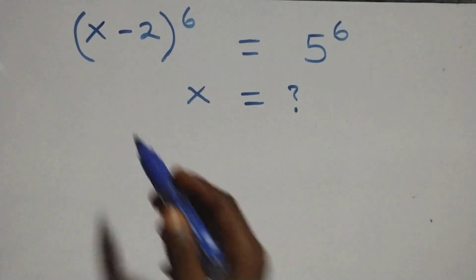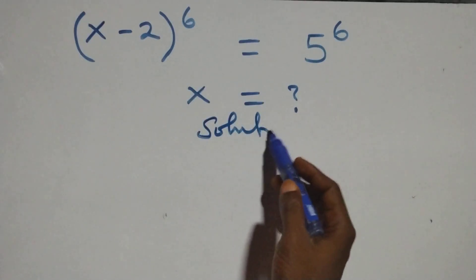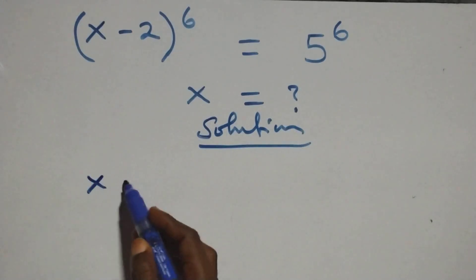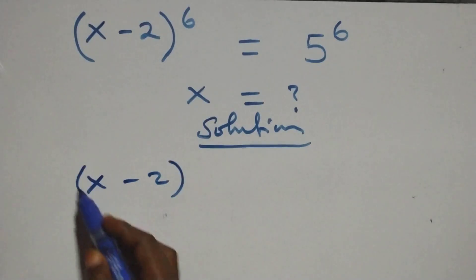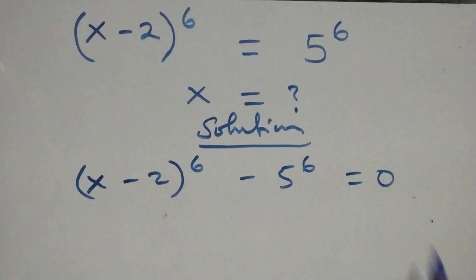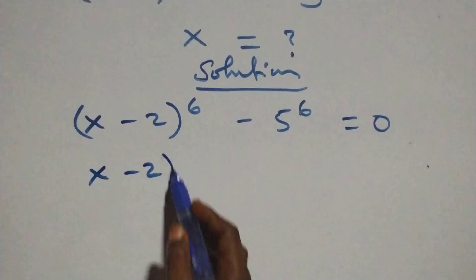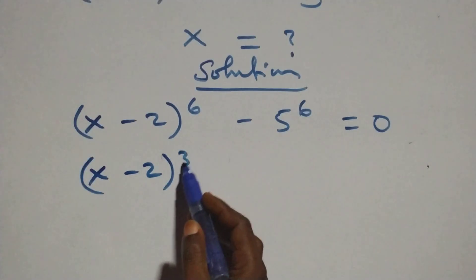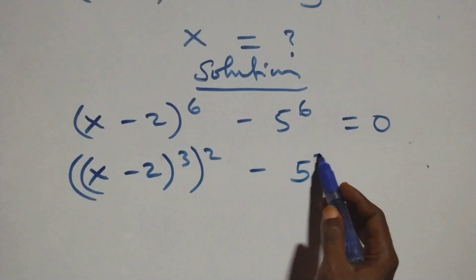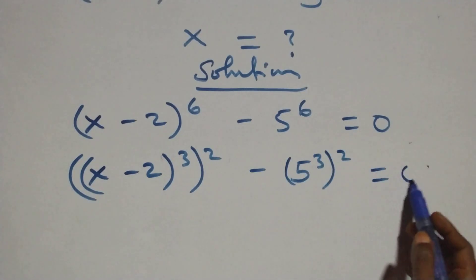Hello, you are welcome. How to solve this nice exponential equation. From what we have here, we take 5 raised to power 6 to the left-hand side. That is, we have (x minus 2) raised to power 6 minus 5 raised to power 6 equals 0. We can rewrite this as (x minus 2) raised to power 3, all raised to power 2, minus 5 raised to power 3, all raised to power 2, equals 0.